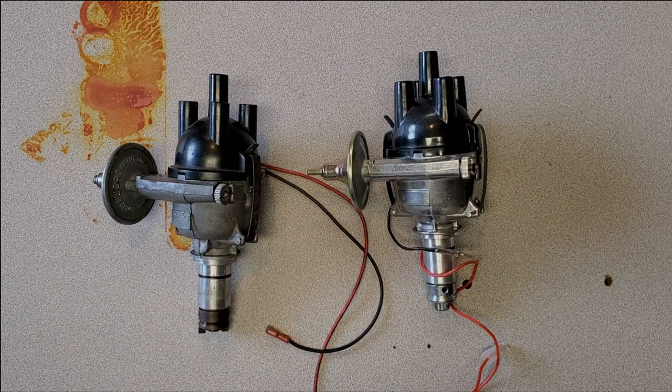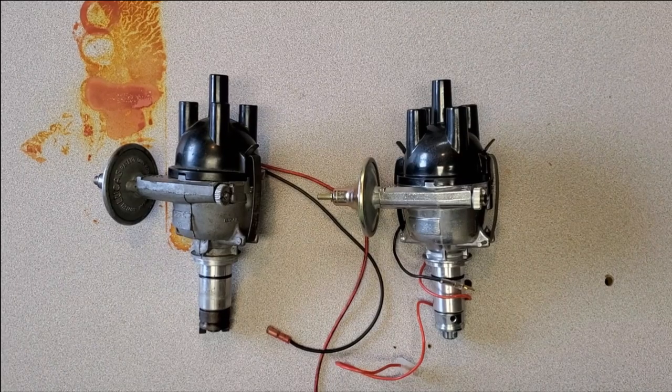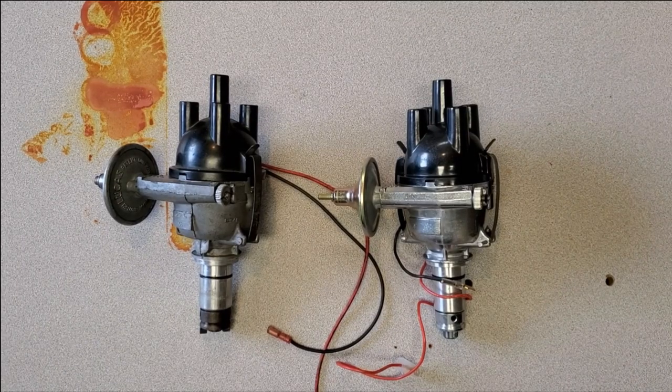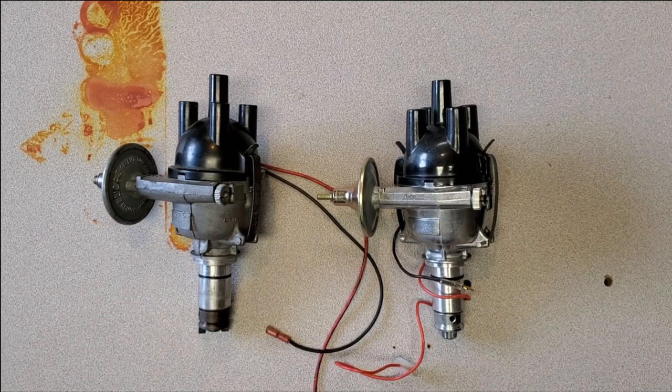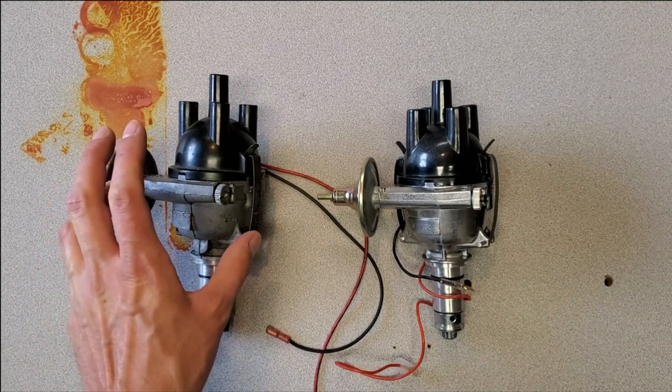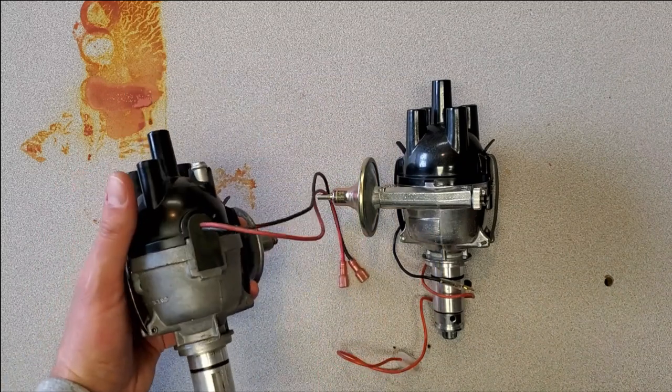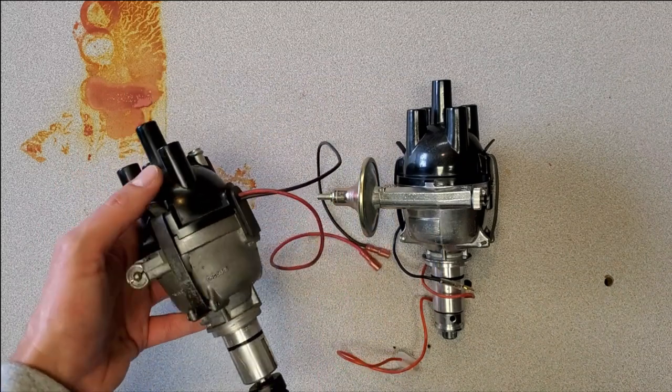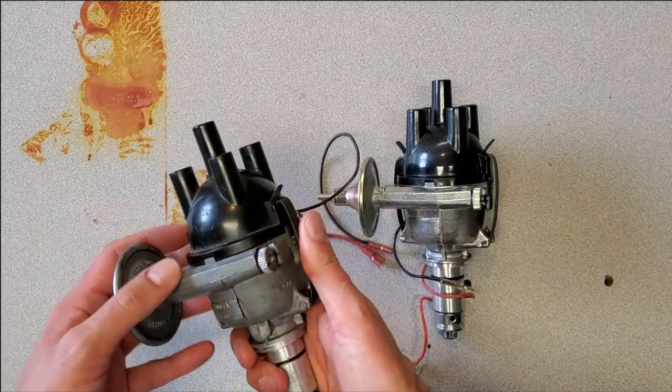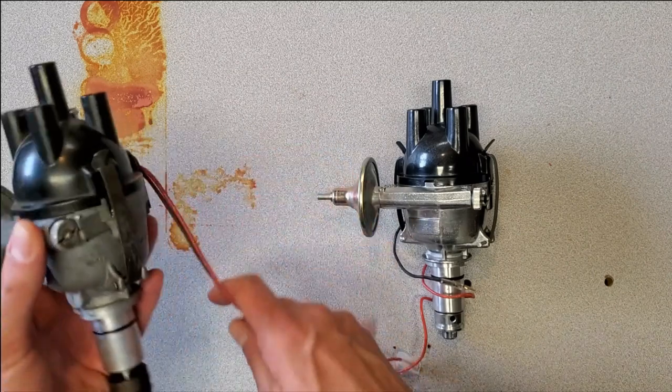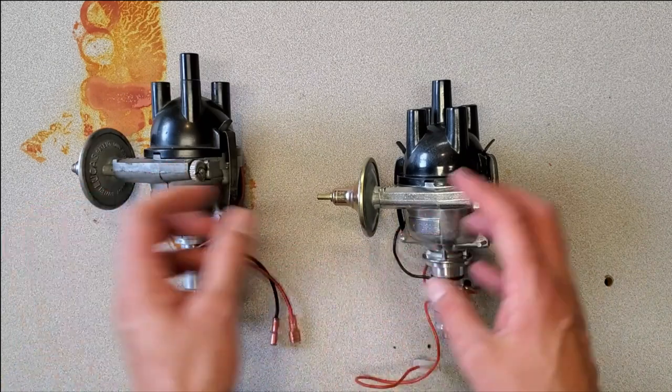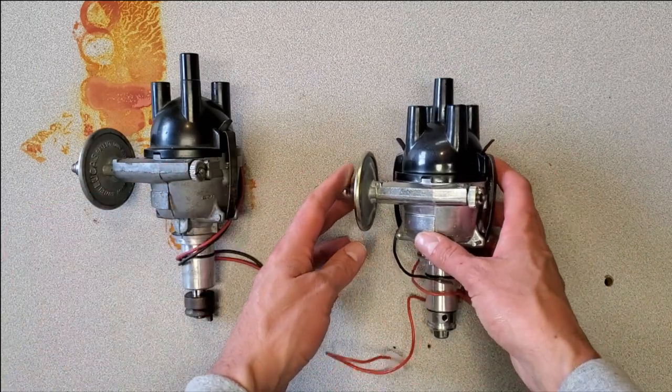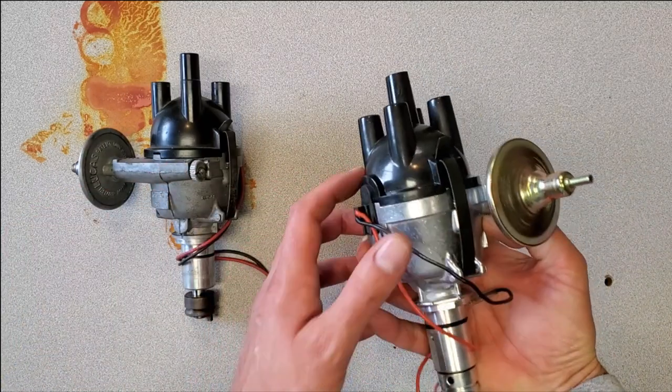First off, I'd like to talk about why you would use a reproduction unit versus repairing an original Lucas. It takes a lot of effort to clean them, redo the springs, and modify the weights and cam. These are brand new, so they're extremely clean with a working vacuum module.